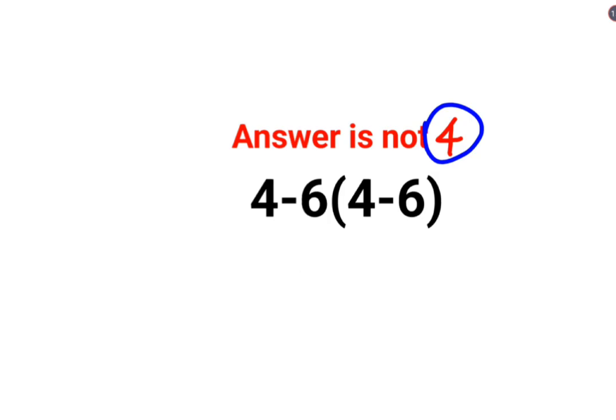At this point we will keep the rest of the question as it is 4 minus 6. Since there is no sign between 6 and the bracket means it is multiplication. 4 minus 6 is 2.